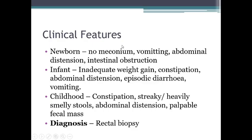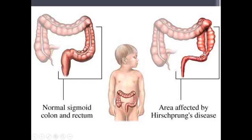Clinical features of Hirschsprung's disease in newborns include failure to pass meconium, vomiting, abdominal distension, and intestinal obstruction. In infants, there is inadequate weight gain due to absorption problems, constipation, abdominal distension, episodic diarrhea, vomiting, and in childhood, heavy intestinal stools with a palpable fecal mass because stool remains retained in the aganglionic segment.